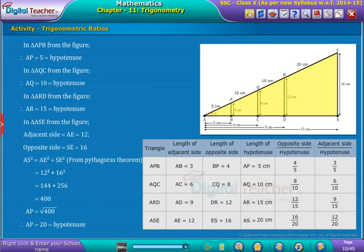Finally, we observe that the ratios of opposite side to the hypotenuse side of all the triangles are equal, and also ratios of adjacent side to the hypotenuse side are equal. Now, let us learn ratios of trigonometry.